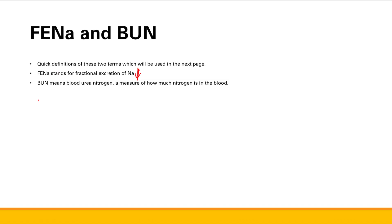Next we have BUN, which stands for blood urea nitrogen. When we do this lab test, we're measuring the amount of nitrogen in the blood. You're not directly measuring the amount of urea, but you can use them interchangeably because nitrogen is carried in the blood in the form of urea. So you can think of it as how much urea — or nitrogen — is in the blood; it's all the same thing.